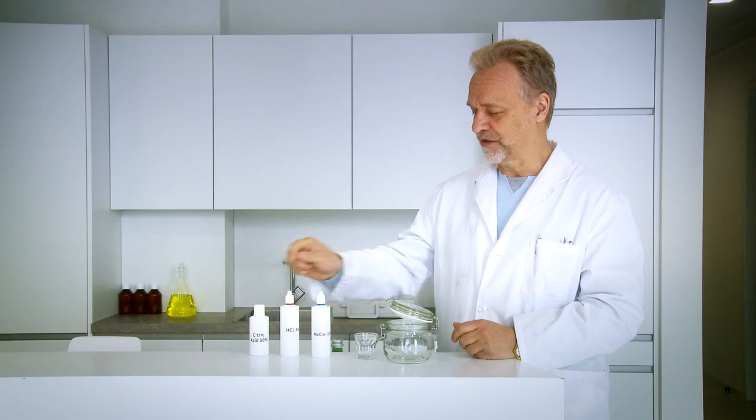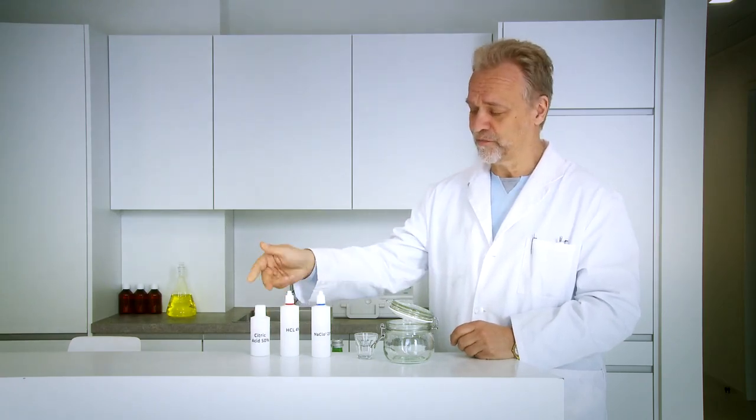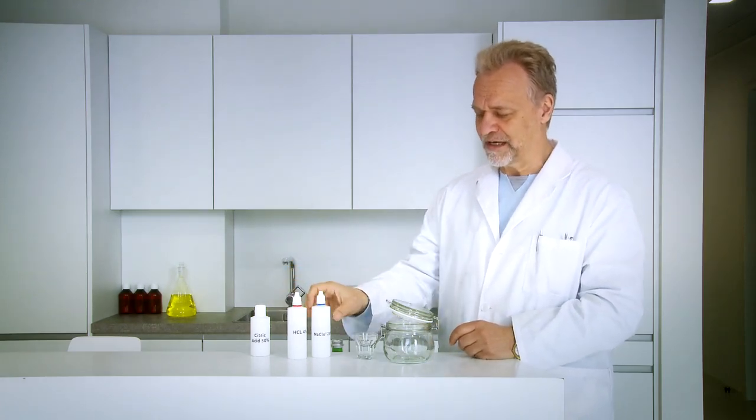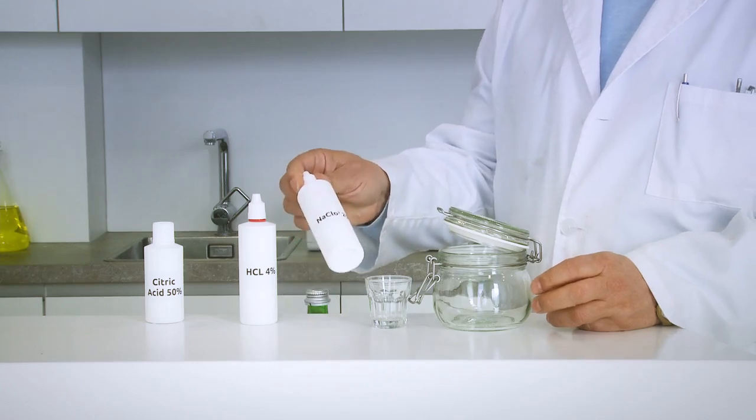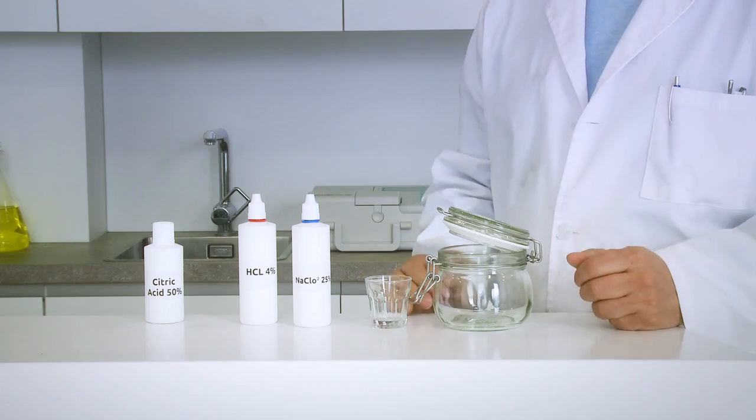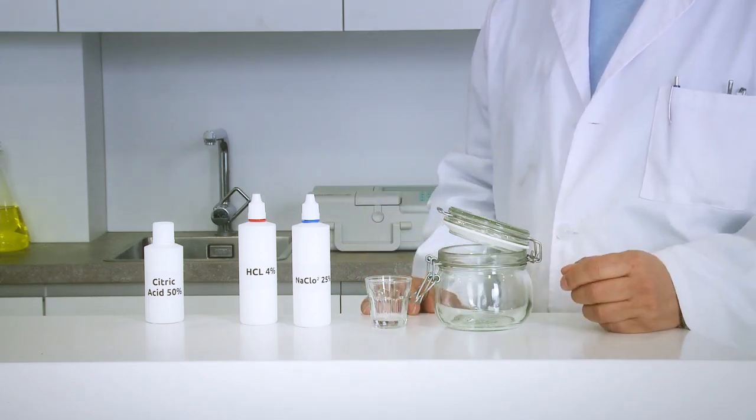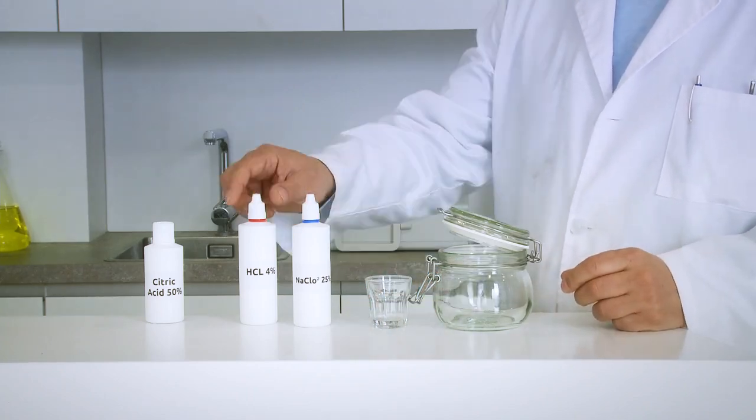Many people don't have hydrochloric acid, so we can use citric acid as well for the same procedure to make CDS. In this case we will prepare it with hydrochloric acid at 4% concentration. Here we have the sodium chlorite at 25% concentration. It does not have to be exactly 25%, it can be 22.5%, 24% or 25%, it is not so important.